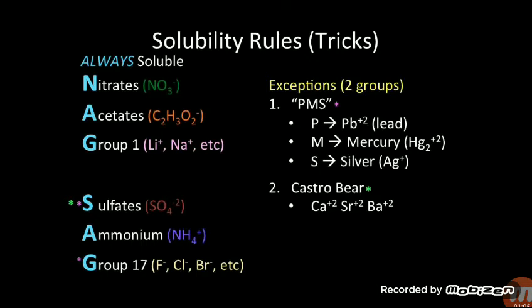On the lower left side, we also have compounds with sulfates, ammonium, and Group 17. That means all compounds formed with sulfates, ammonium, and Group 17 will always be soluble — with some exceptions, which are indicated by asterisks: a magenta color asterisk on Group 17 and a green color asterisk on sulfates.